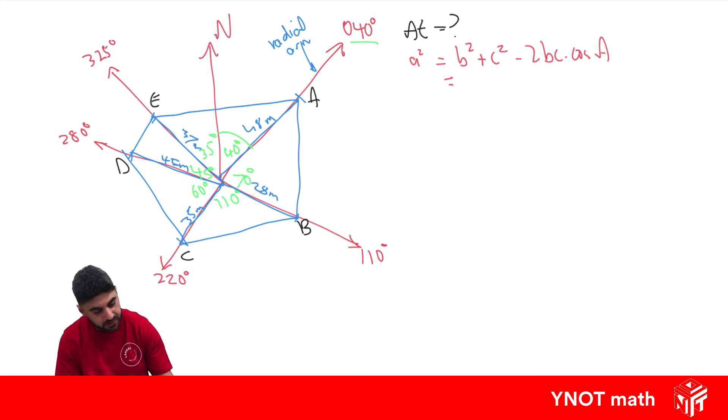So we'll have 37² + 48² - 2 × 37 × 48 × cos(A). Now A is the total angle here because we're using this triangle here, and that's 35 plus 40 to give us 75 degrees.